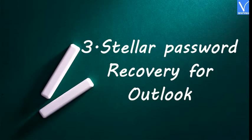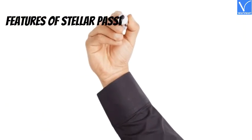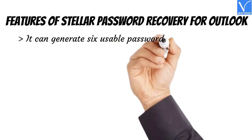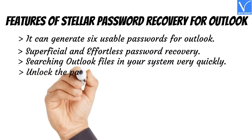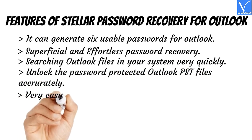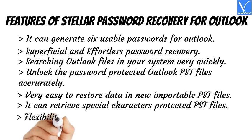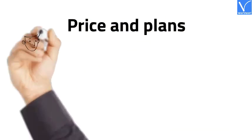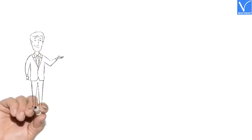Number 3: Stellar Password Recovery for Outlook. Stellar Password Recovery for Outlook is well-known software to recover the password of Outlook. It can recover your lost password very easily, and it can also unlock password-protected Outlook PST files. Features: It can generate 6 usable passwords for Outlook. Superficial and effortless password recovery. Searches Outlook files in your system very quickly. Unlocks password-protected PST files accurately. Very easy to restore data in new importable PST files. Retrieves special character-protected PST files. Flexibility to run on any Windows platform. Our viewers get a special 10% discount on Stellar Password Recovery for Outlook. The product and discount links are provided in the description.